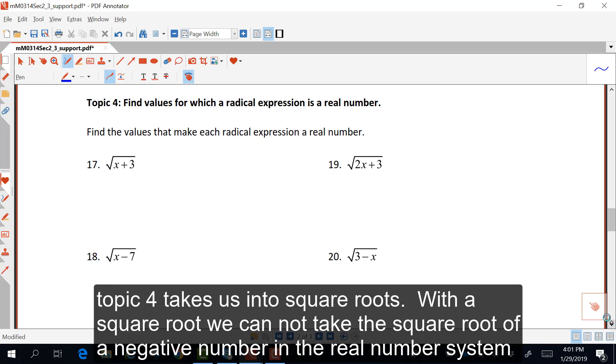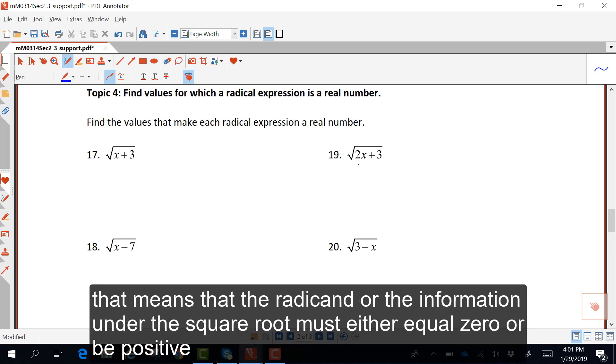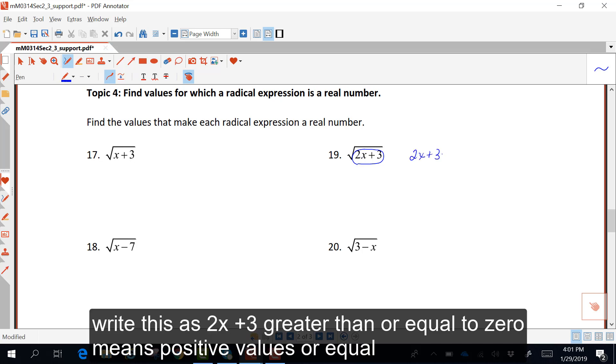Topic 4 takes us into square roots. With a square root, we cannot take the square root of a negative number in the real number system. That means that the radicand, or the information under the square root, must either equal 0 or be positive. We write this as 2x plus 3 greater than or equal to 0 means positive values or equal.